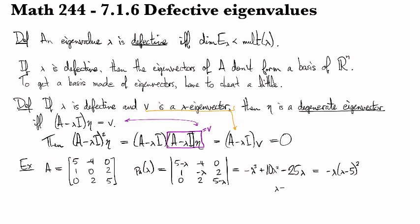So we have lambda_1 equals zero, lambda_2 equals five, and lambda_3 equals five. So in particular, we have that the multiplicity of lambda equals 5 is two.